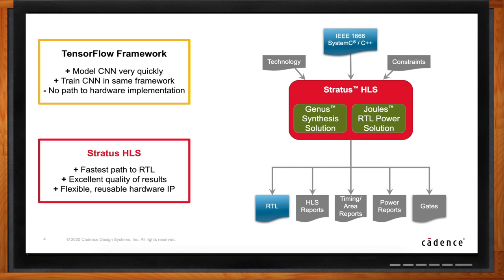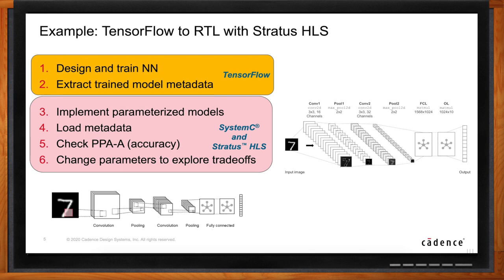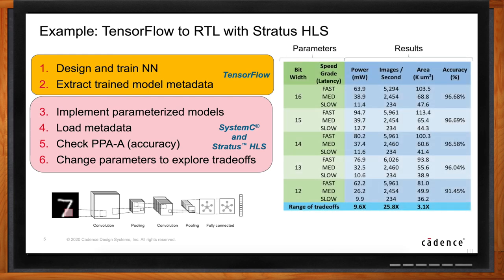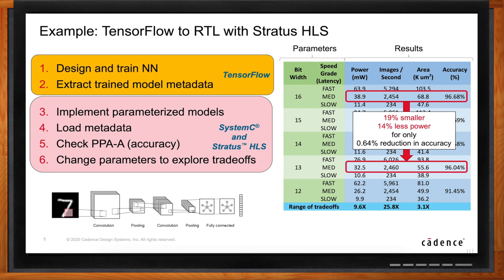How do we get from TensorFlow into HLS? There are several steps. You start with your TensorFlow design, create and train your network, and extract the model metadata — the weights and bias values from training. Then you implement the same operations, like conv2d or max pool, in SystemC. These models are parameterized and use the same weights and biases from training. You verify the network and check that it meets your performance criteria. If not, you change the parameters to explore trade-offs — this kind of trade-off analysis is very difficult to do in a traditional RTL flow.